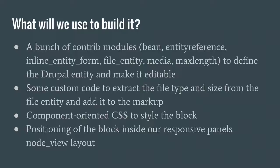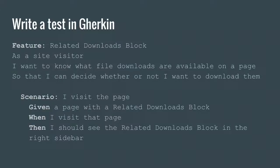So I thought about how I would write a test for this in the language that Behat uses — Gherkin, because Behat is a PHP port of the Ruby tool Cucumber. Here's a little test: 'Given a page with a related downloads block, when I visit it, then I should see that block in the sidebar.' Is this a good test? It's okay. It is declarative — that's good. It is written in domain-specific language; 'related downloads block' is something intelligible to the product owners.